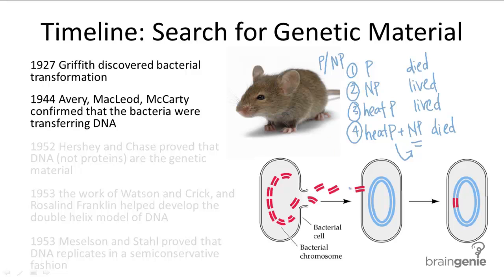When a bacterial cell is killed, its genome is broken up into chunks, and then a live bacterial cell can take one of these DNA chunks, incorporate it into its genome, and effectively become a pathogenic cell from being non-pathogenic. So here's where we end our first video. Please check out our second.